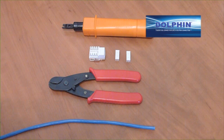Today we are wiring a Dolphin 90-degree keystone jack, a DC-KJ5E90. These instructions will apply to the Dolphin's Cat 5e and 6 jacks, whether shielded or unshielded.